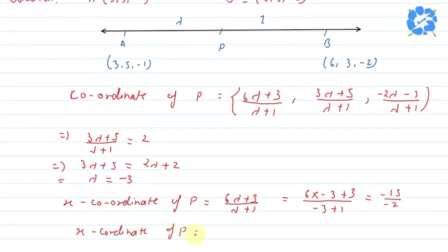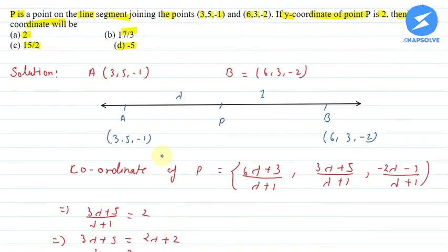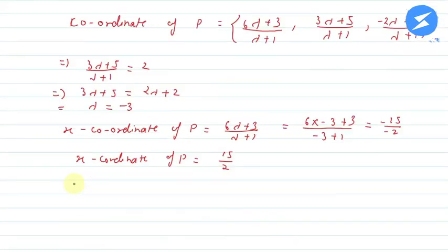Now let's check the options. Option C is correct (15/2). Hence, option C is right. I hope you all understood the explanation. Thank you very much.